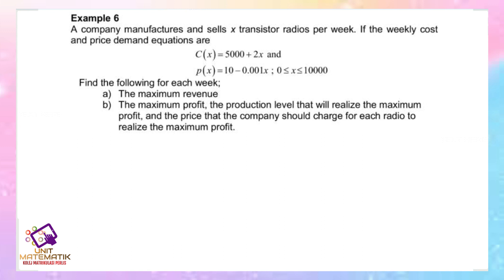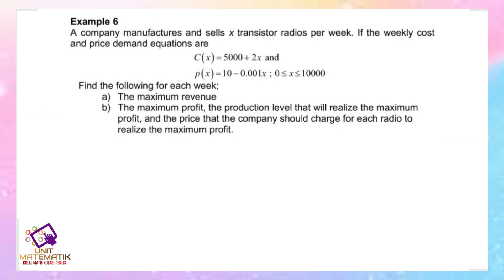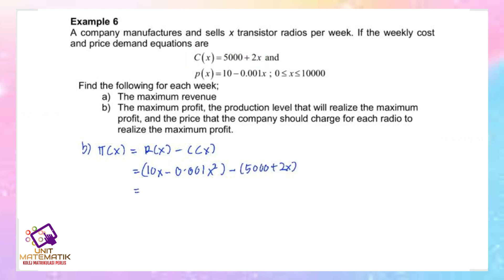For part (b), we want to find the maximum profit, the production level, and the price. We cannot use the quantity from part (a) since that was for maximum revenue. The profit function equals revenue minus cost: π(x) = (10x - 0.001x²) - (5000 + 2x), which simplifies to π(x) = 8x - 0.001x² - 5000.